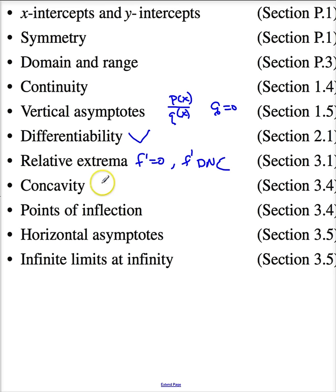You're going to look at concavity. Remember this is where the second derivative is positive or the second derivative is negative. So this is concave up, this is concave down. You're going to look for points of inflection. Points of inflection are where the second derivative is zero and the concavity goes from concave up to concave down, or where the second derivative goes from positive to negative or negative to positive.